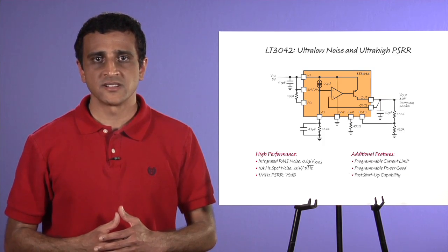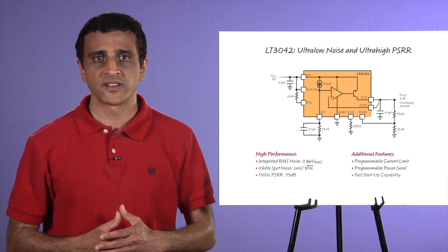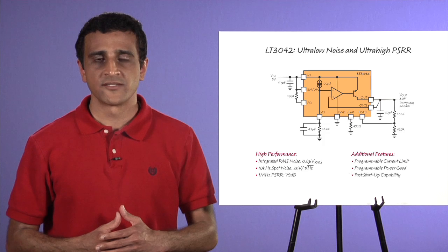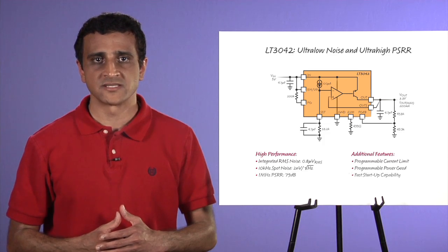With its ultra-high PSRR over a wide frequency range, the LT3042 allows lower frequency operation of the upstream switcher for improved efficiency and EMI without requiring any increase in filter component size for powering noise-sensitive applications.